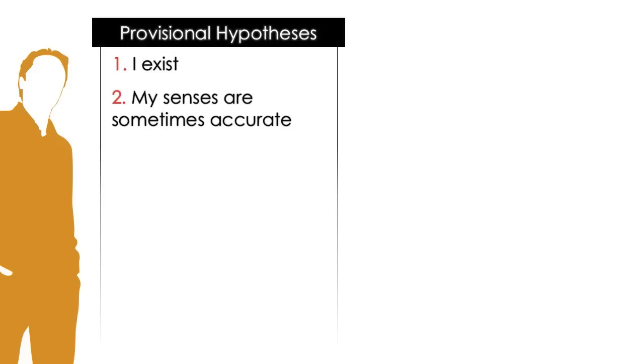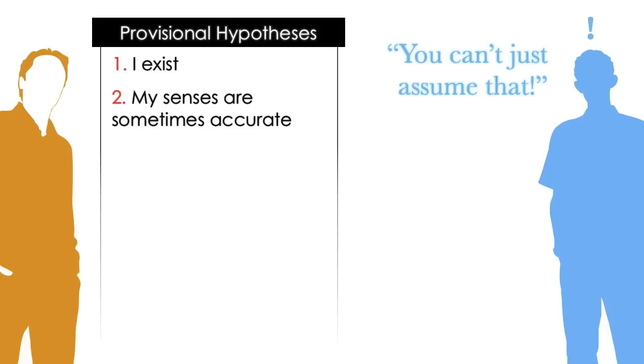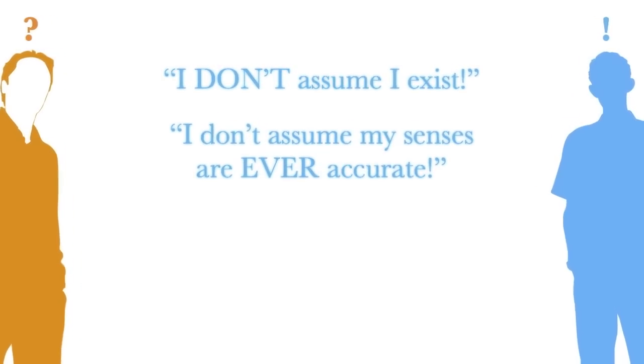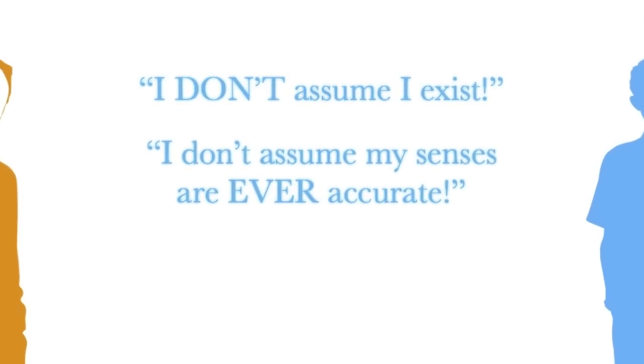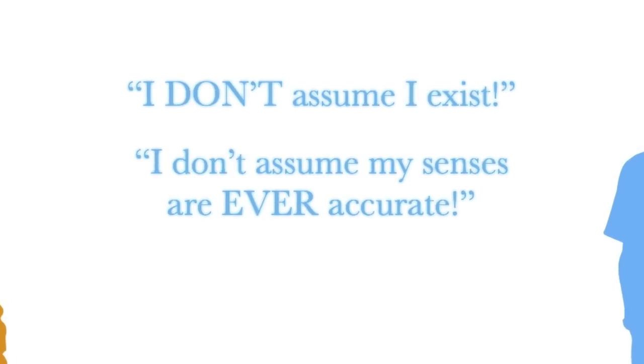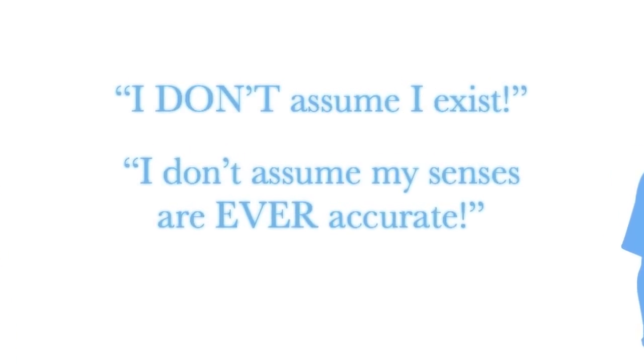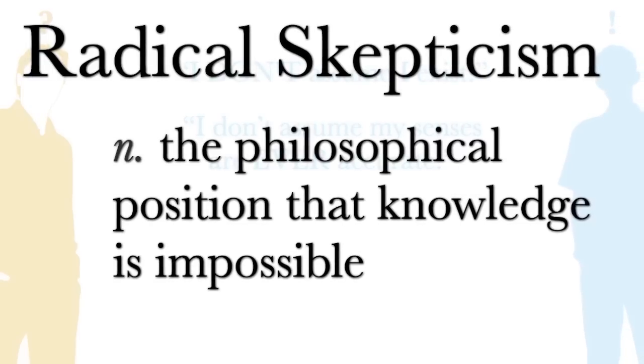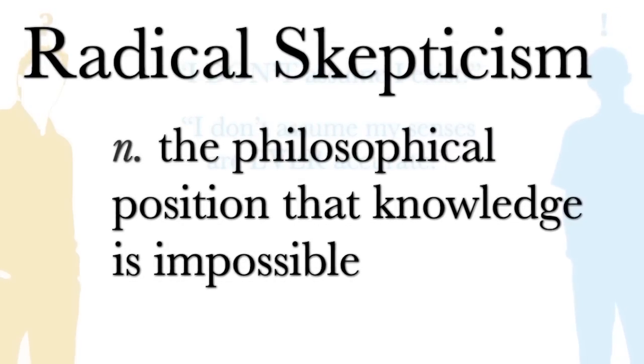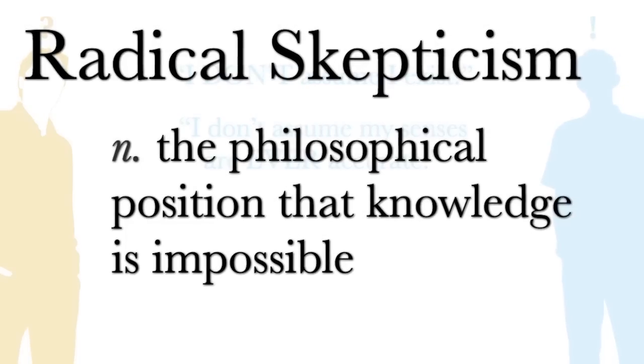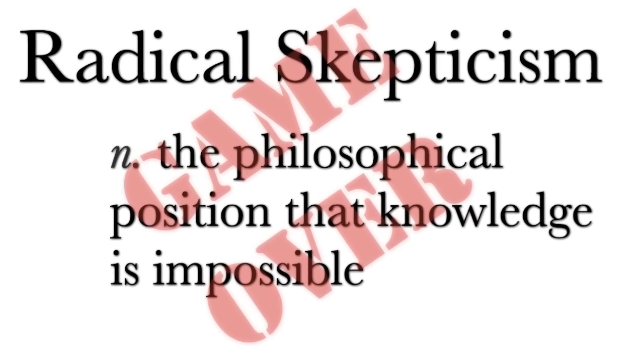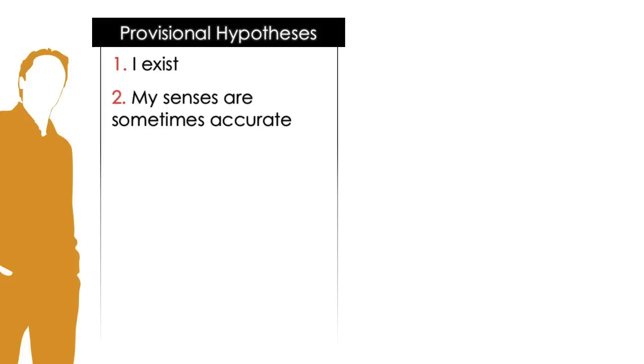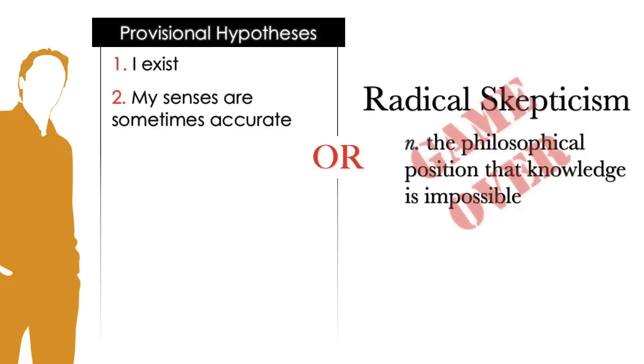I would have no power to infer anything about the world around me. Now, despite this, some people immediately jump ship at this point, saying you can't just assume that. What exactly are these people trying to say? Are they arguing that they don't assume their own existence? Are they arguing that they don't assume their senses are ever accurate? Anyone taking such a stance would be espousing radical skepticism, which is the philosophical position that knowledge is impossible. This position takes us nowhere. If this is our stance, then it's game over epistemologically.